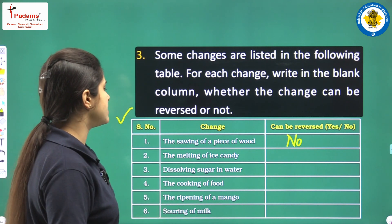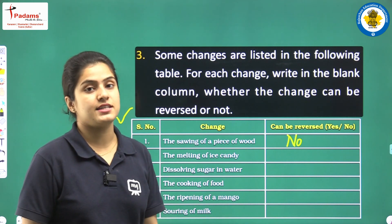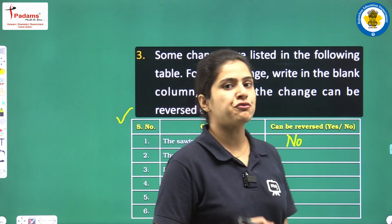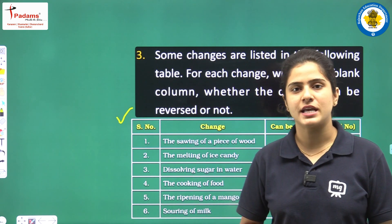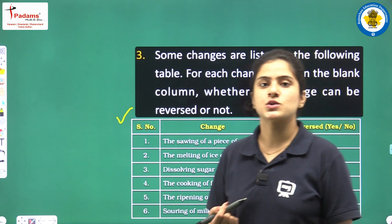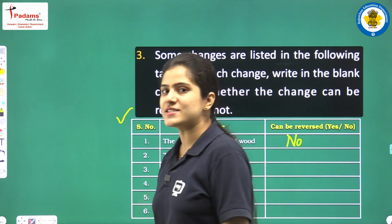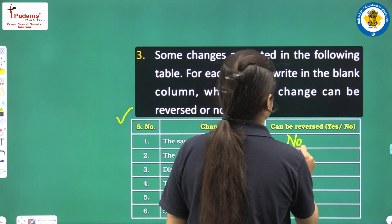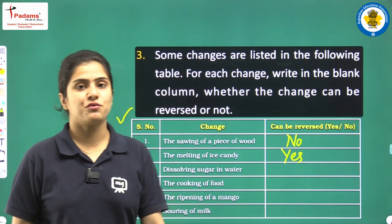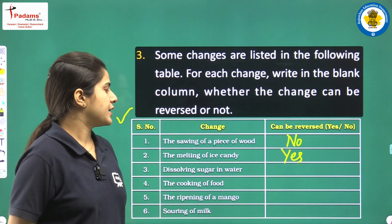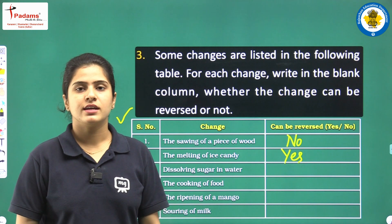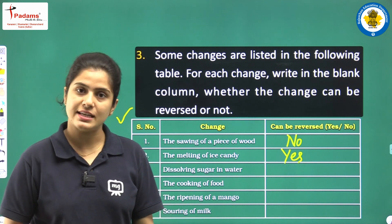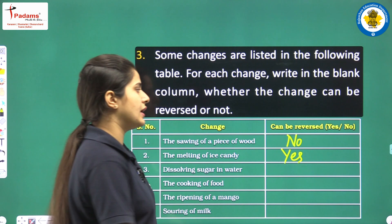The next change: the melting of ice candy. When you melt an ice candy, after freezing it, it can be obtained as it was before. So the answer to this is yes — it can be reversed. Next: dissolving sugar in water. If you are dissolving sugar in water, you can easily reverse the change. So this is also yes.